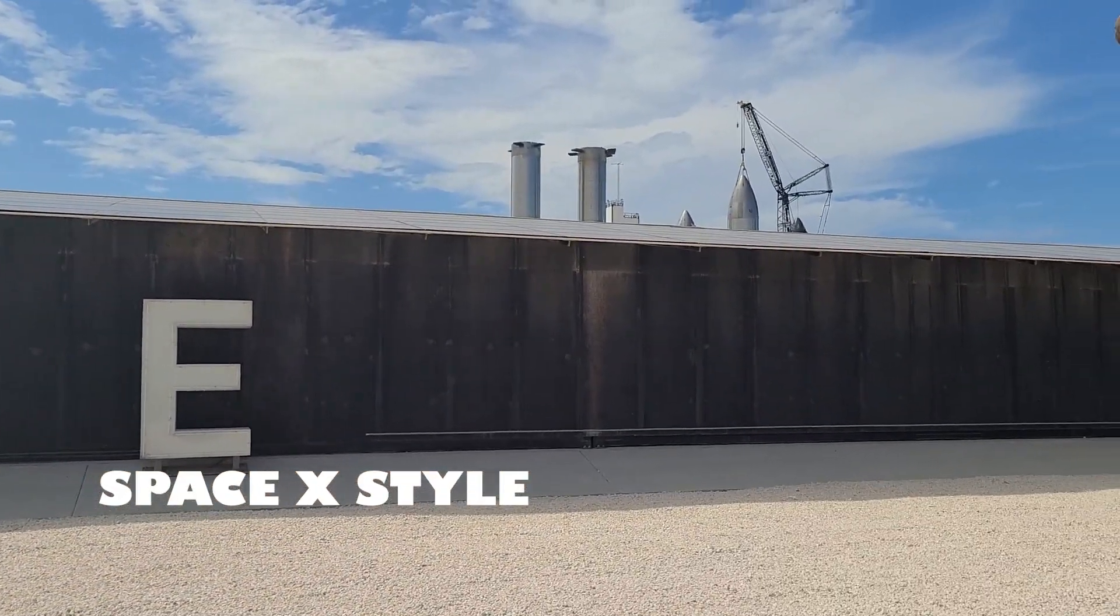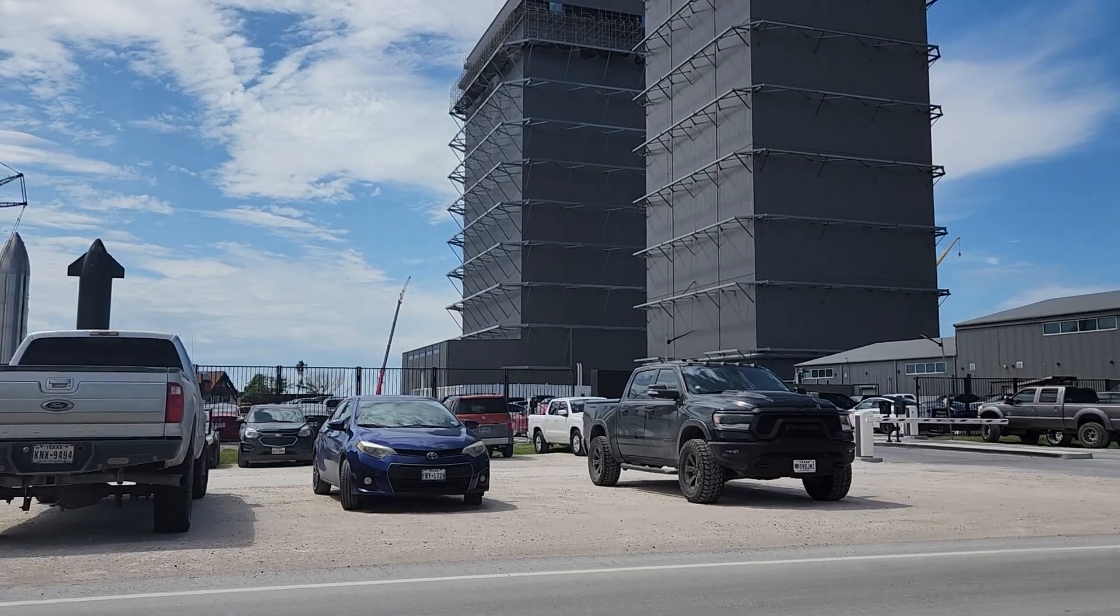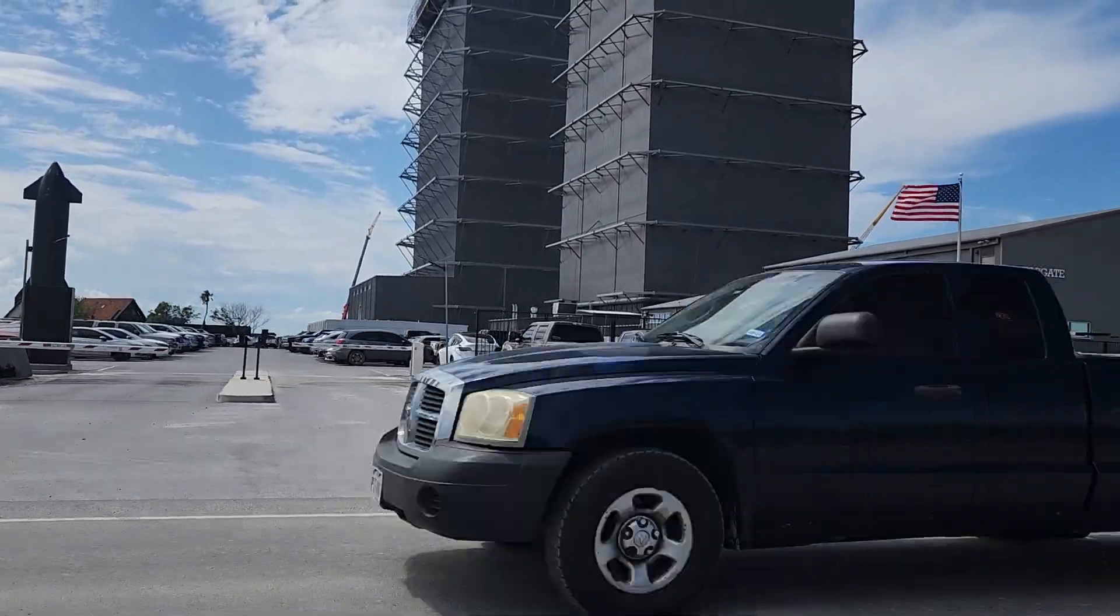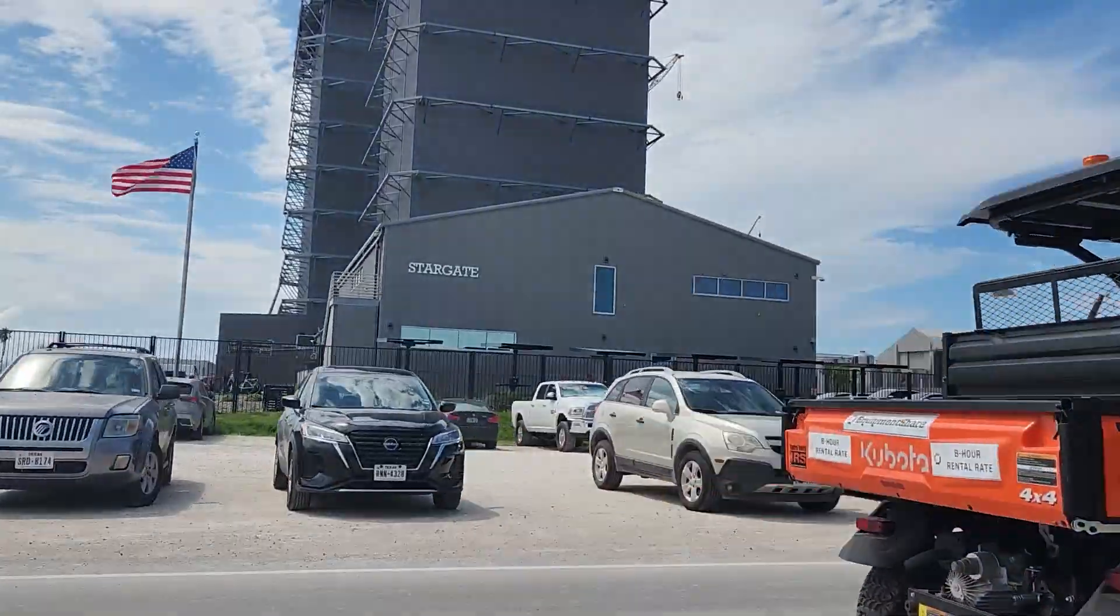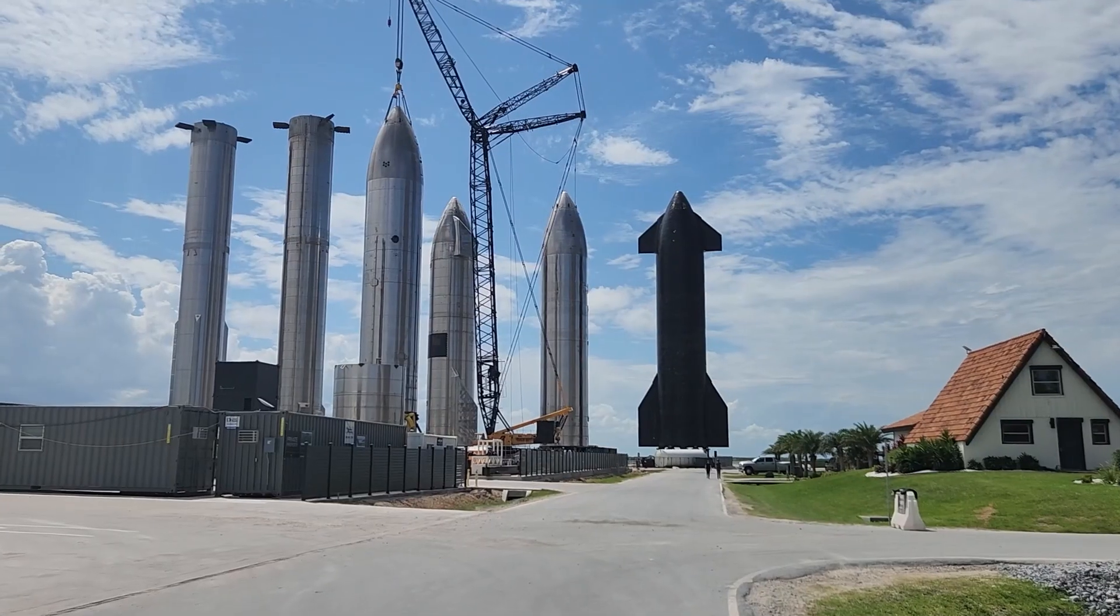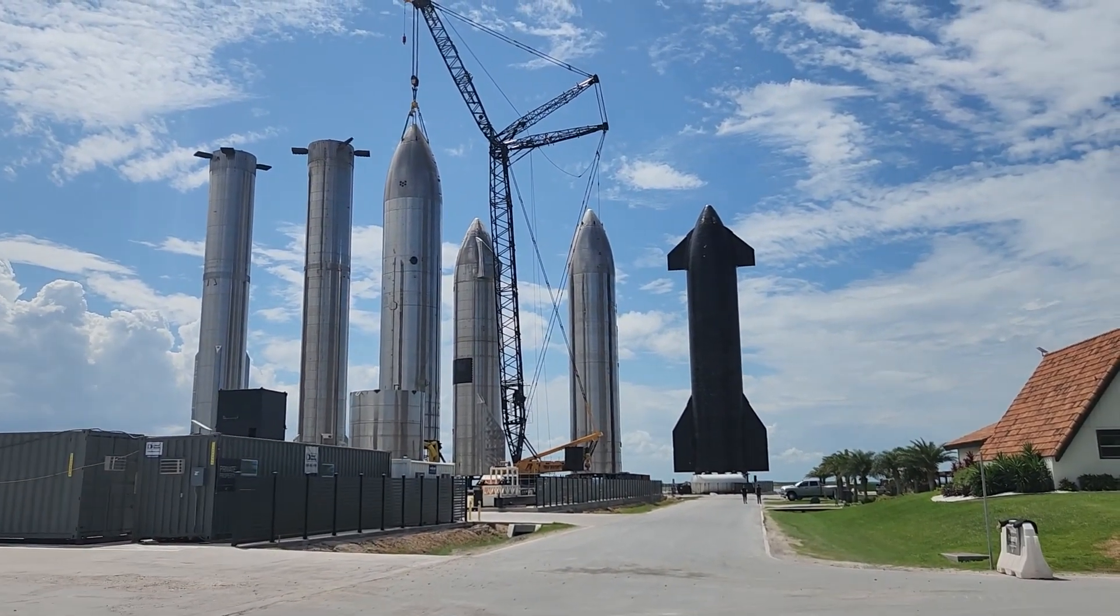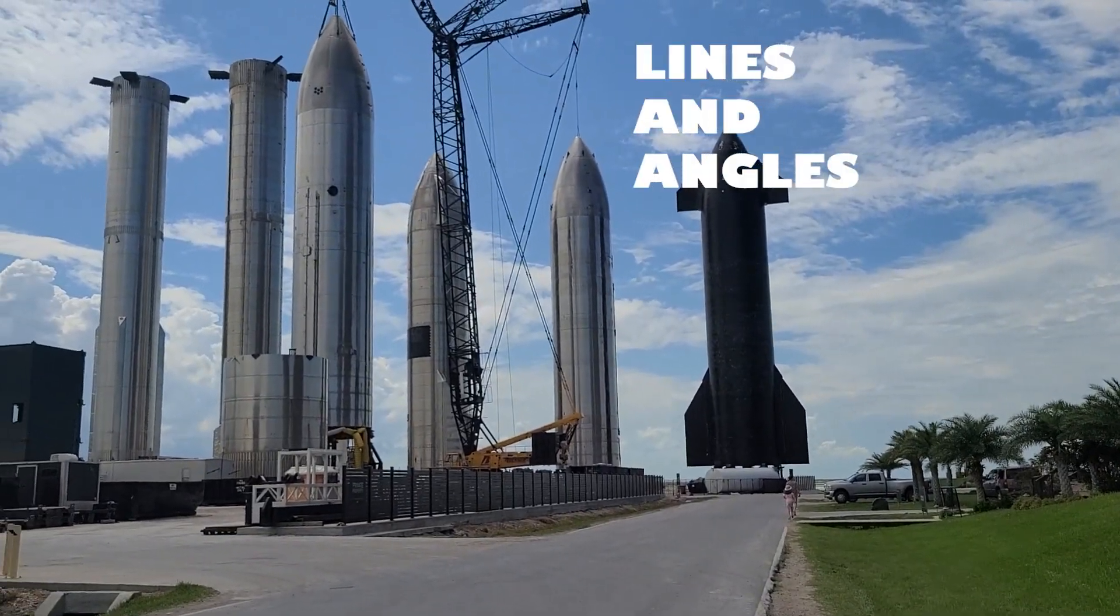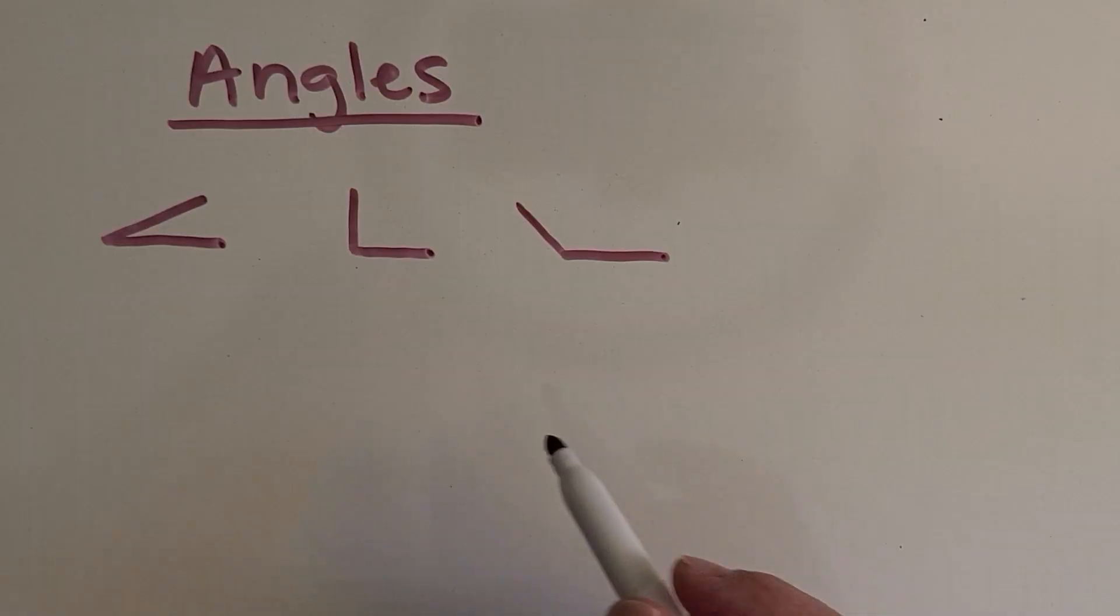Come along with me to the Starbase production site in Boca Chica, Texas. SpaceX is an American spacecraft manufacturer company founded by Elon Musk. They build space vehicles that consist of the first stage Super Heavy Booster and the second stage spacecraft, also named the Starship. So that's what you're looking at in the background here. And we're going to use this really cool site to start searching for different types of lines and angles. I see so many cool examples of that here at this site, so let's get started.